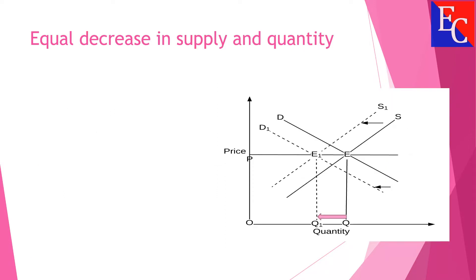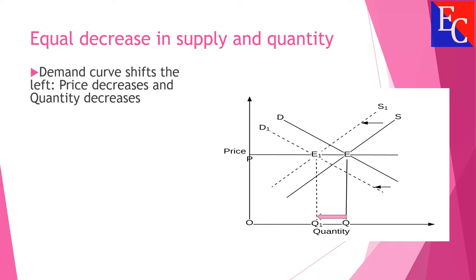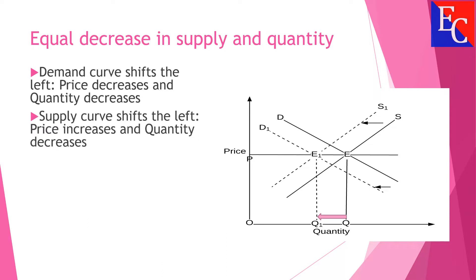Equal decrease in demand and supply. Due to decrease in demand, the demand curve shifts to the left, price decreases and quantity decreases. Due to decrease in supply, the supply curve shifts to the left.